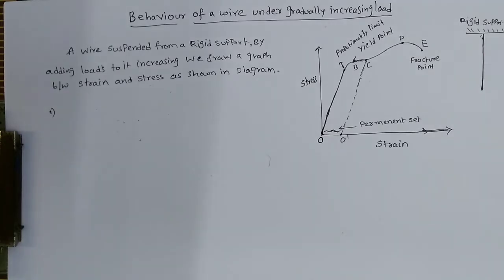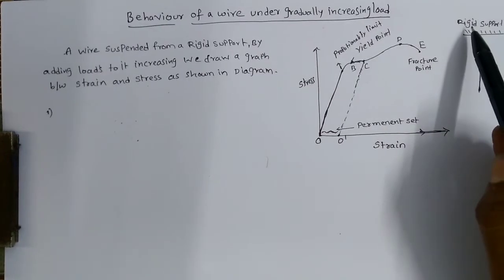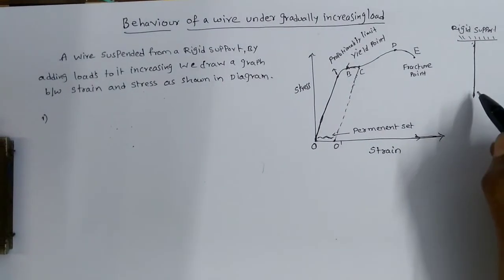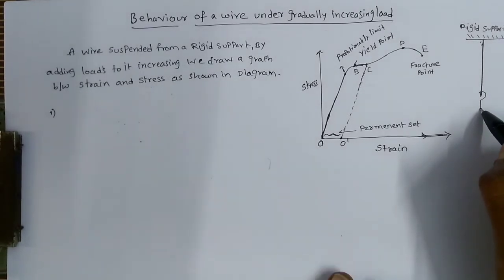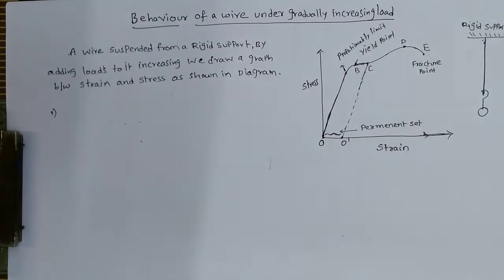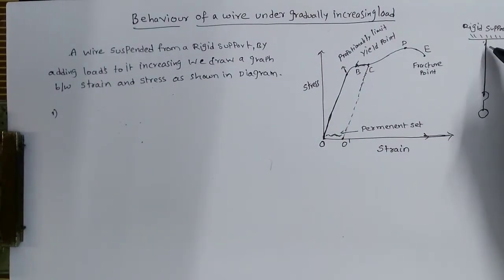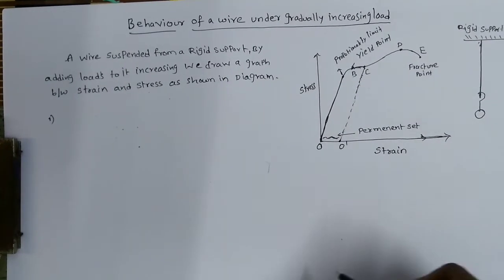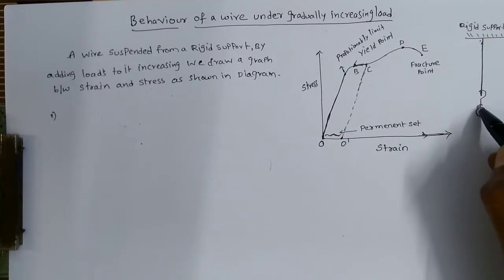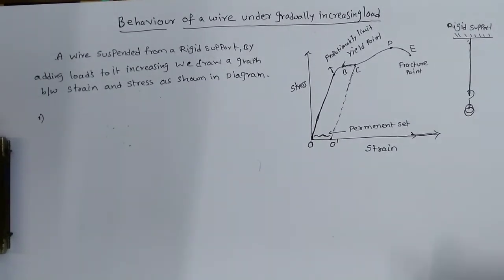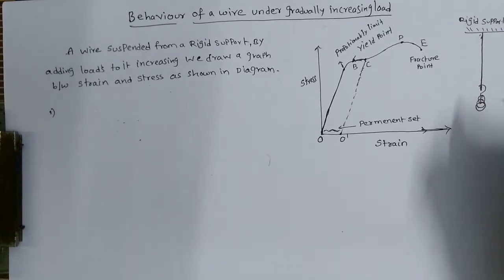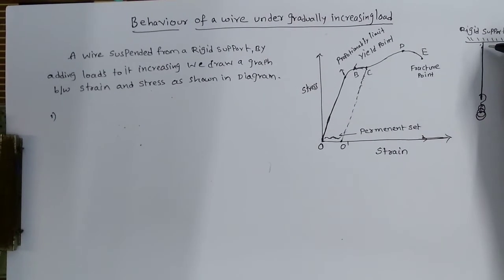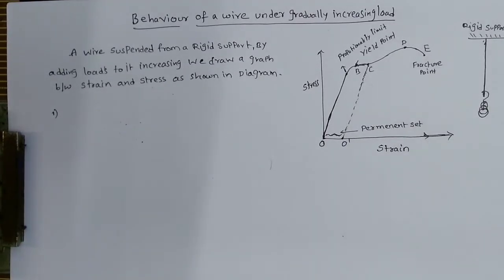For this question, I will take a rigid support here. A wire is freely suspended to this. If you add some weights to this, the wire will be elongated in the downward direction. If you add some more weight, it will elongate more and more. Gradually, if the load is increasing, we can explain how the wire behaves.